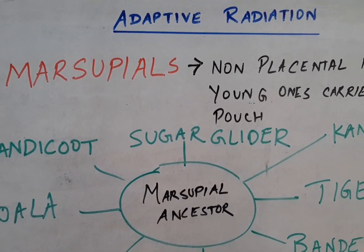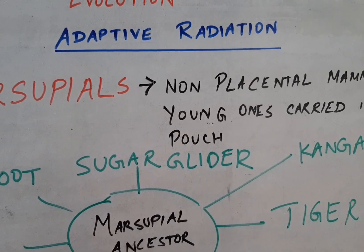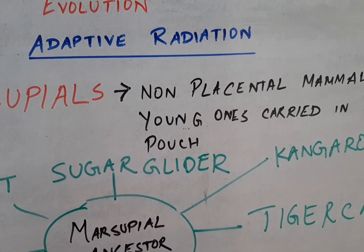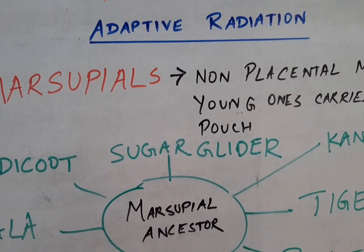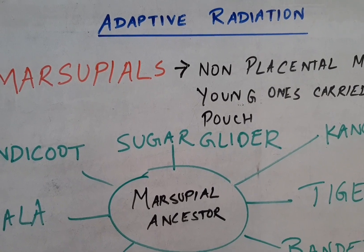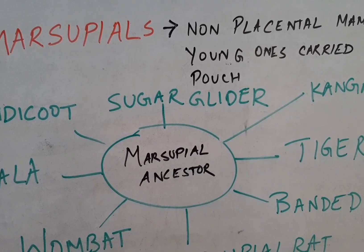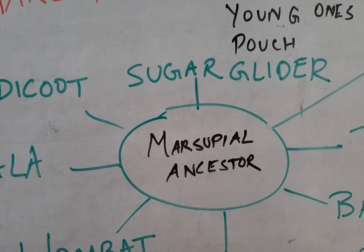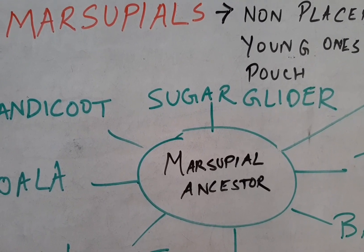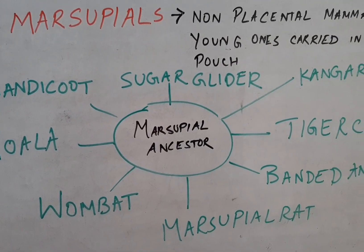The next topic is adaptive radiation with the example of marsupials. Marsupials are a type of non-placental mammal — they do not form a placenta, and the young ones are underdeveloped, raised in the pouch of the mother. Marsupials are mainly found in Australia and South America, with nearly 250 species in Australia alone and about 150 in South America. The ancestral marsupial, believed to exist during the dinosaur age, was a small, mouse-like tree-climbing creature that underwent changes through natural selection and gave rise to various other marsupial animals.